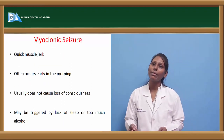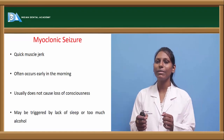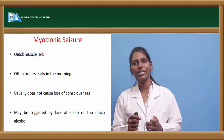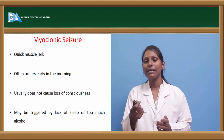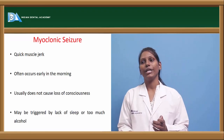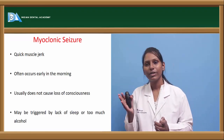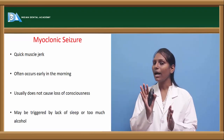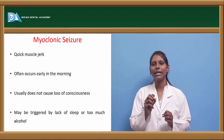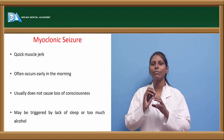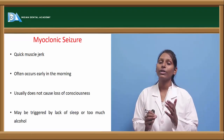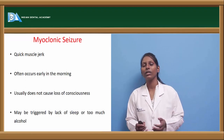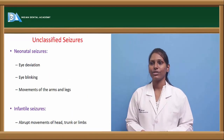Myoclonic seizure involves a quick muscle jerk, usually occurring early in the morning. Patients are usually conscious but exhibit quick muscle jerks. Myoclonic seizures can be triggered by lack of sleep or excessive alcohol consumption.